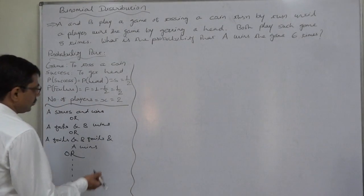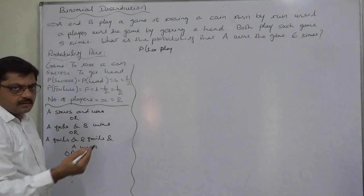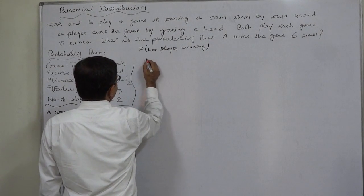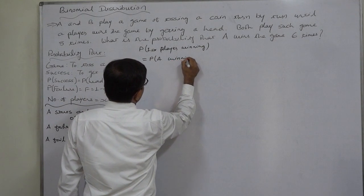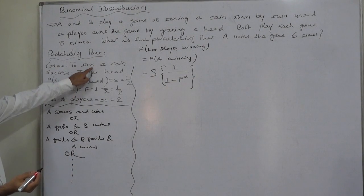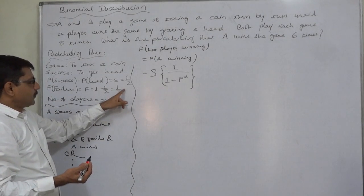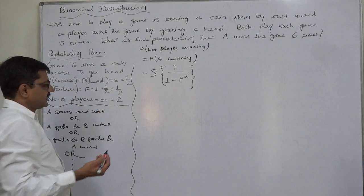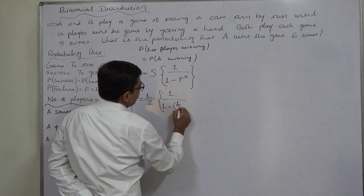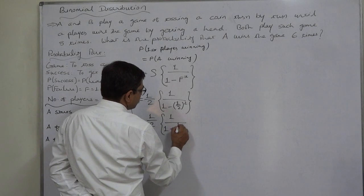We can use the formula: probability of the first player winning the game — whoever is the first player, whether B or A — here A starts the game, so probability of A winning the game equals S into 1 upon 1 minus F raised to X. The game is to toss a coin and the definition of success is to get head, so probability of success S will be 1 by 2. Probability of failure F will also be 1 by 2. The number of players X is 2. So it will be 1 by 2 into 1 upon 1 minus 1 by 2 raised to 2.